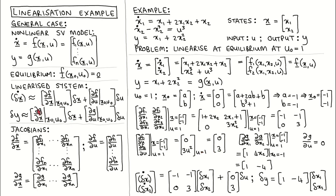For the next Jacobian, we have to calculate the derivative of function g with respect to the states x1 and x2, which results in this row vector. After evaluating it at the equilibrium, we get this constant row vector. For the last Jacobian, we have to calculate the derivative of function g with respect to the input u, which is equal to 0.